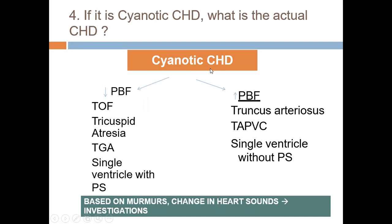In cyanotic congenital heart disease, there are two groups. The first group has decreased pulmonary blood flow: Tetralogy of Fallot (due to PS), tricuspid atresia with a restrictive VSD narrowing the right-sided outflow. Note that tricuspid atresia has eight subtypes; the usual presentation is cyanosis, but some subtypes present with heart failure or shock — those are rare.